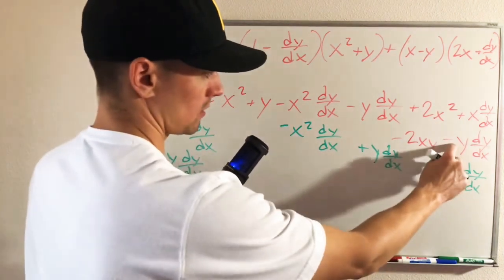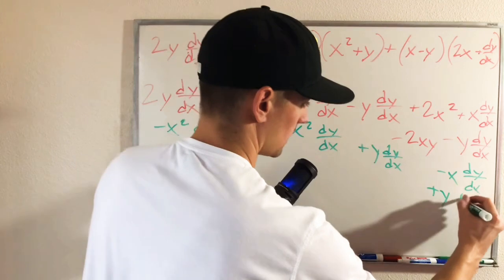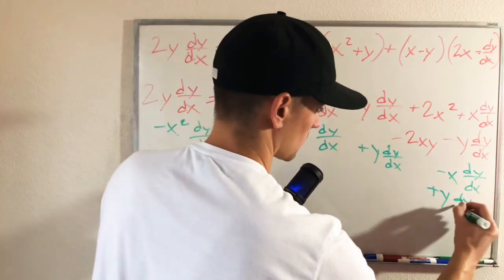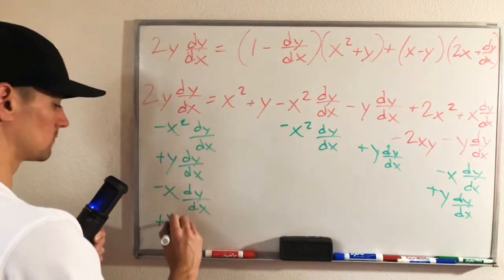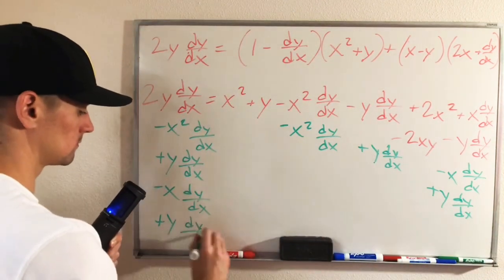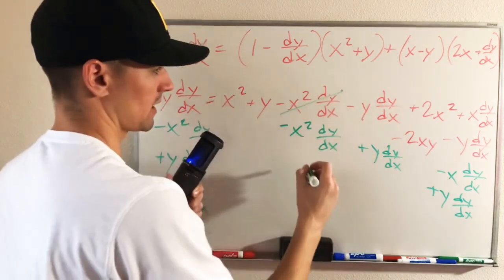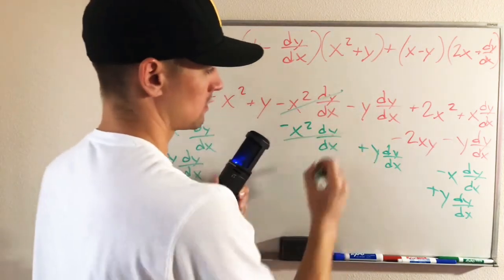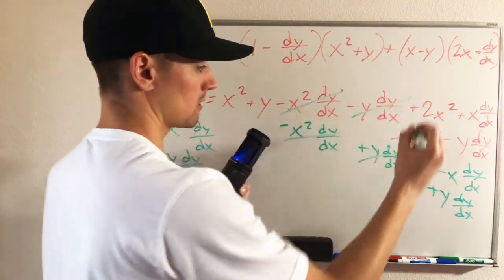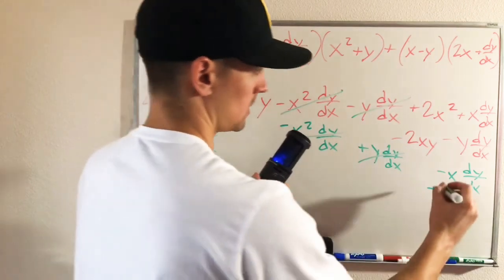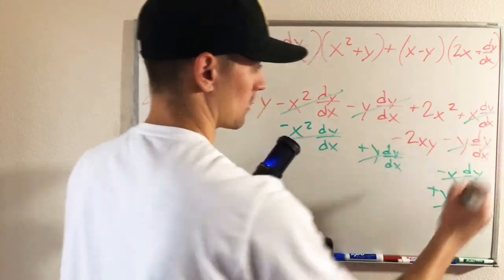And then lastly, we have plus y dy/dx. So what that's going to do is cancel that term out, cancel this term out, cancel this term out, and cancel this term out.